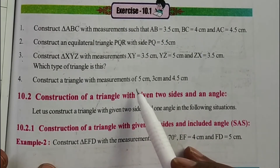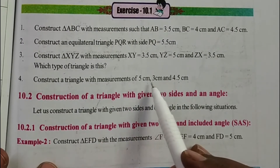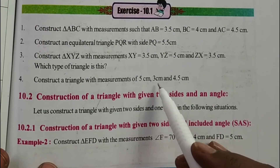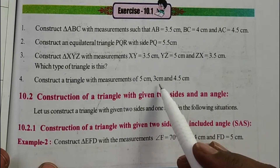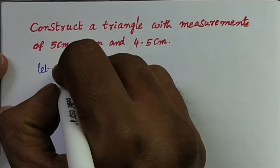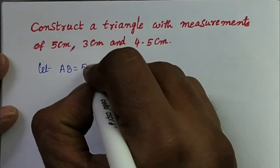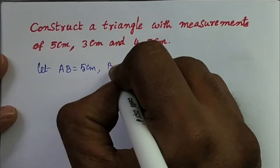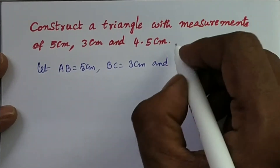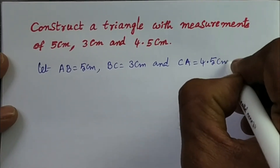Let the measurements of triangle ABC be: AB is equal to 5 cm, BC is equal to 3 cm, and CA is equal to 4.5 cm.